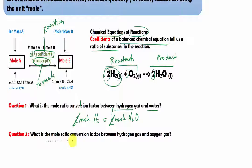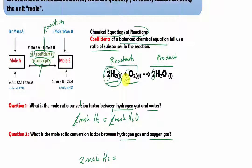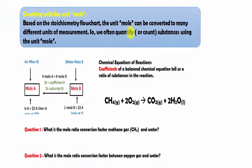What is the mole ratio conversion factor between hydrogen gas and oxygen? We have two moles of hydrogen gas equal to how many moles of oxygen? In this case, oxygen doesn't have a coefficient, so we assume it is one — just like when an element has no subscript, we assume one. So we have one mole of oxygen.